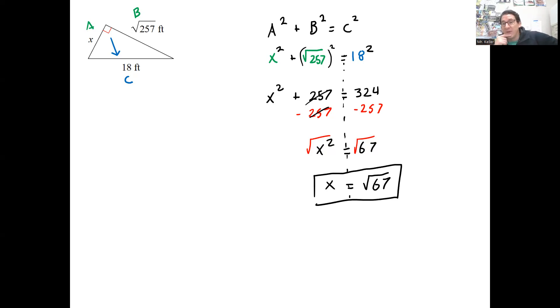Important when you're doing the Pythagorean Theorem: make sure you label the sides A, B, and C, and always, always start with the longest side labeled as C. And that'll do it for us. Next time, more right triangles. Thank you.